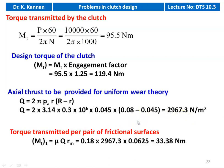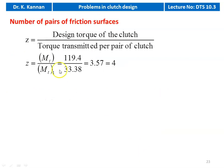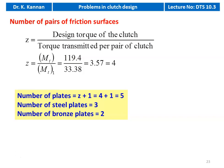The torque transmitted per pair of frictional surfaces MT1 equals mu into Q into Rm. So mu is 0.18, Q is 2967.3, and Rm is 0.0625, giving 33.38 Newton meter. The number of pairs of frictional surfaces Z equals design torque divided by torque per pair: 119.4 divided by 33.38 equals 3.57, rounded up to 4. Number of plates equals Z plus 1, so 4 plus 1 equals 5 plates. Therefore, number of steel plates equals 3 and number of bronze plates equals 2.